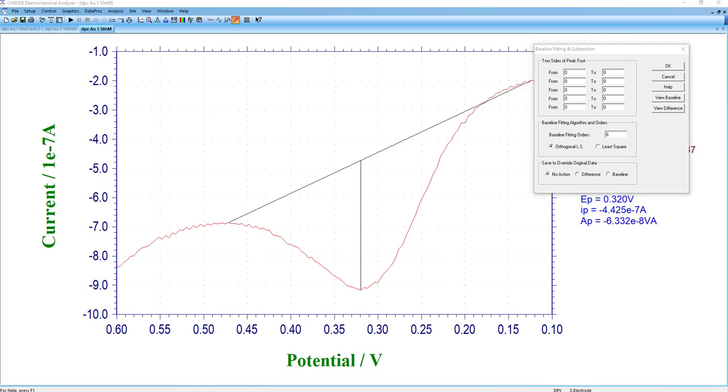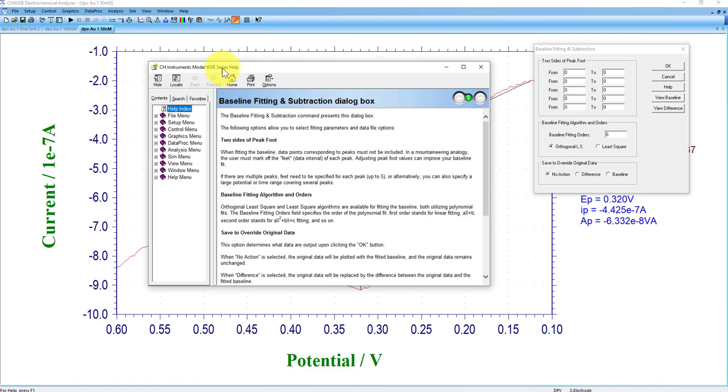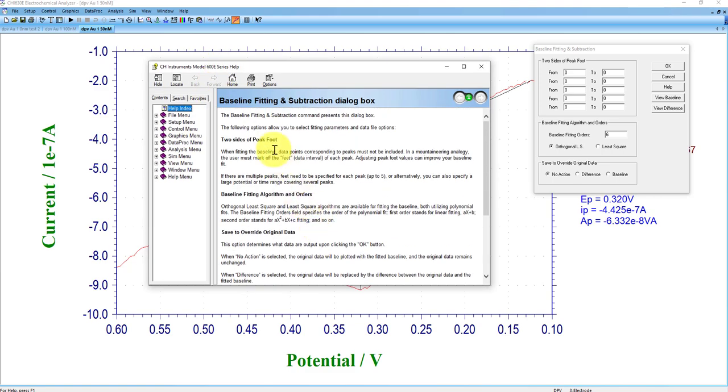What's valuable about this prompt is you can click this help, and this help will walk you through the specific details. It's a pretty simple help menu, so it says that you need two sides of the peak foot, and that's what this whole section of inputs is here.